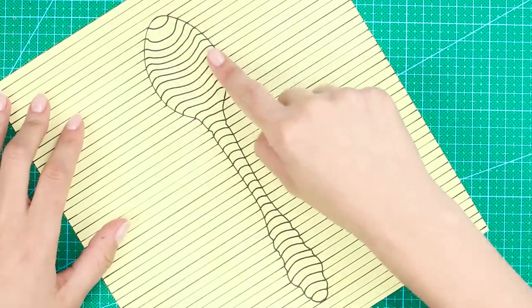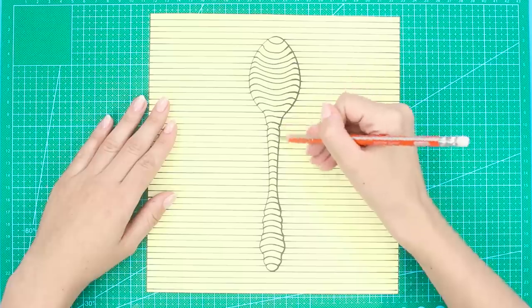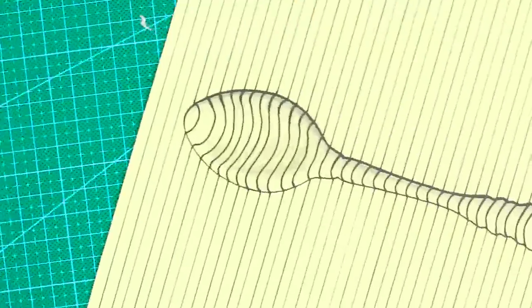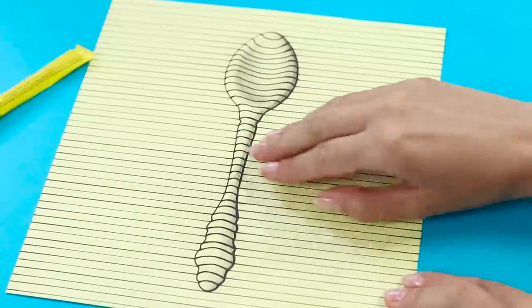Thus the illusion of convex and concave drawings is created. Highlight the contour with the marker. Shade the picture with a simple pencil. Done! It looks very realistic. And immediately, I feel like touching it.